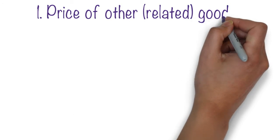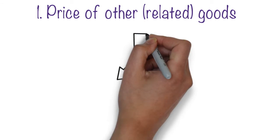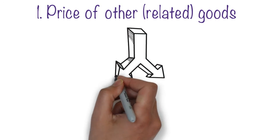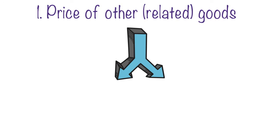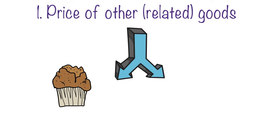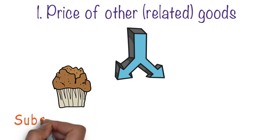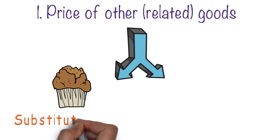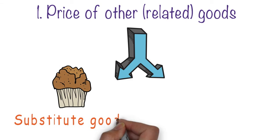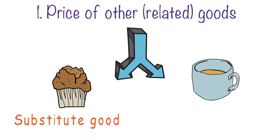These other goods are related to our donut product and are broadly put into two types. The first is a substitute good — in this case, a muffin, which is a substitute for a donut. If the price of a muffin decreases, the demand for our donut will decrease, so that is a shift leftwards in our demand curve.